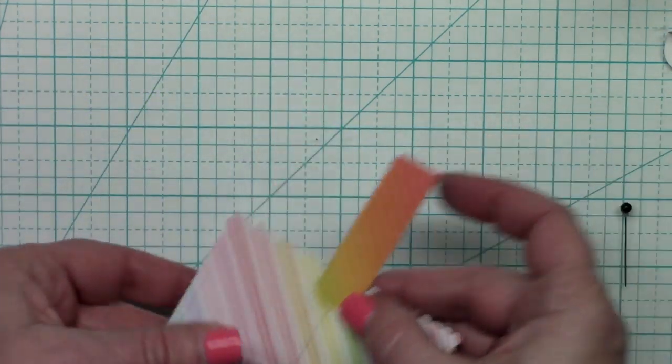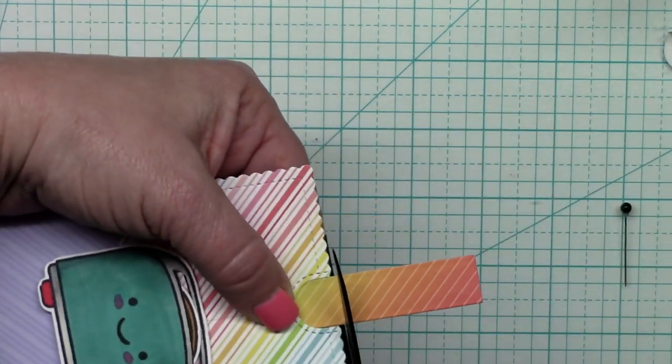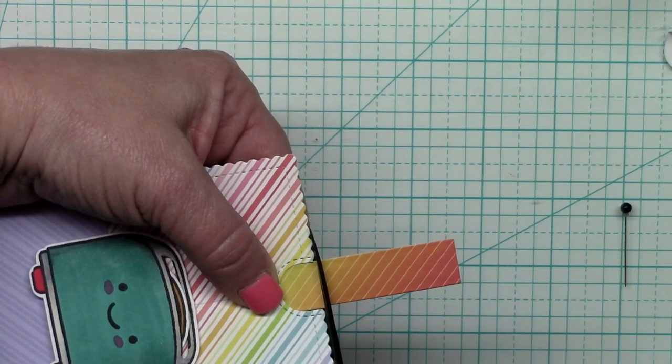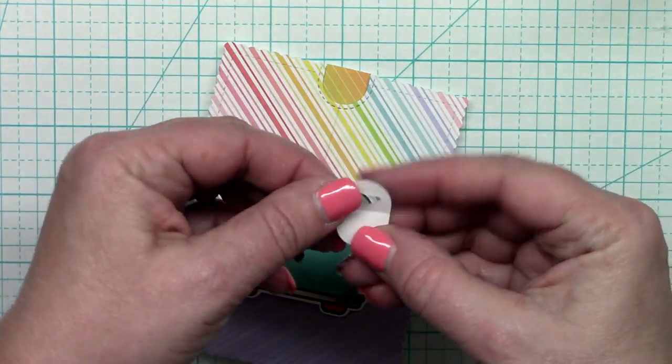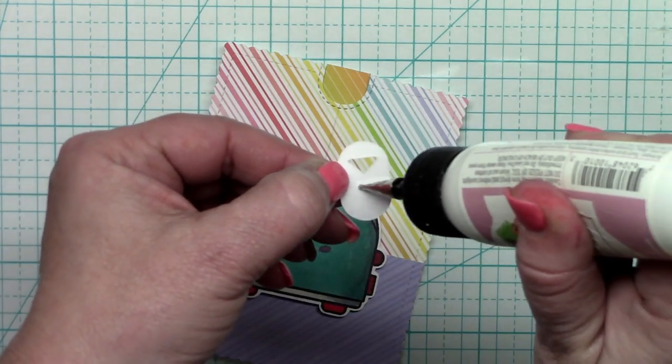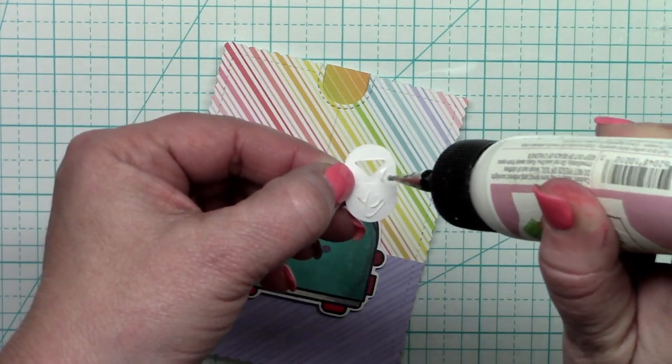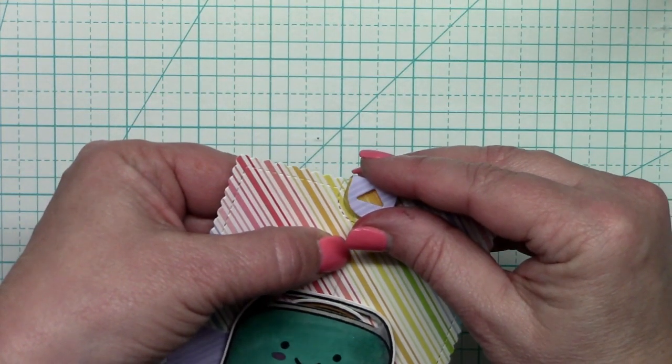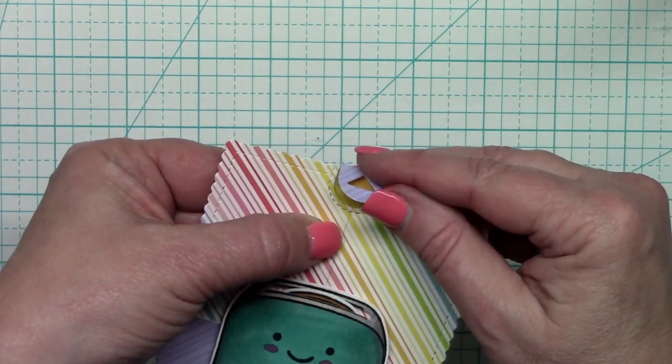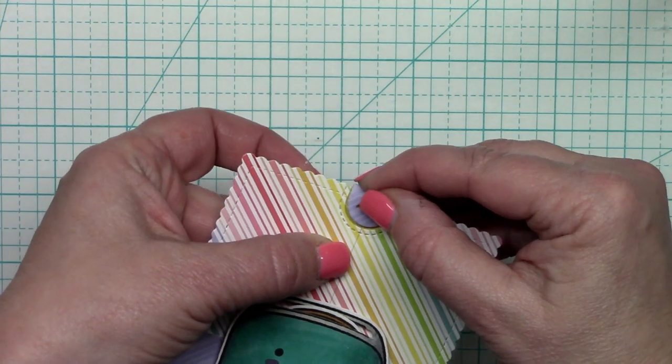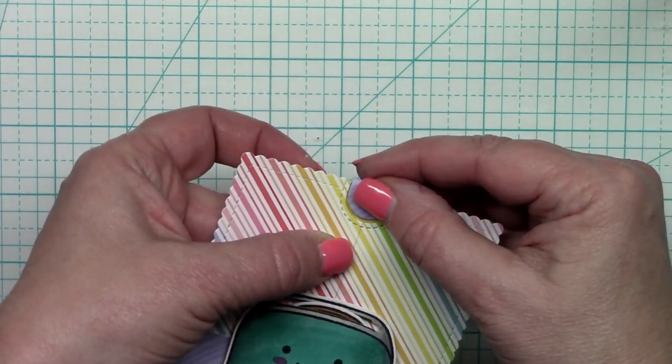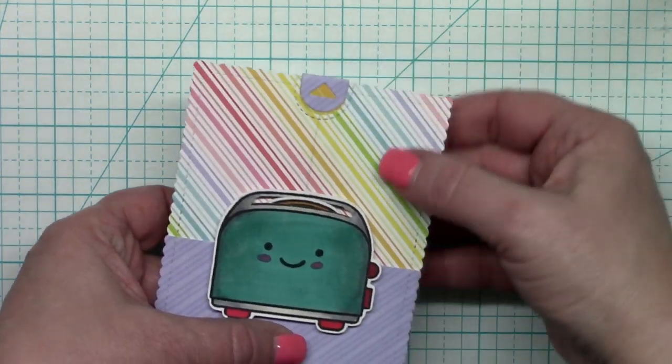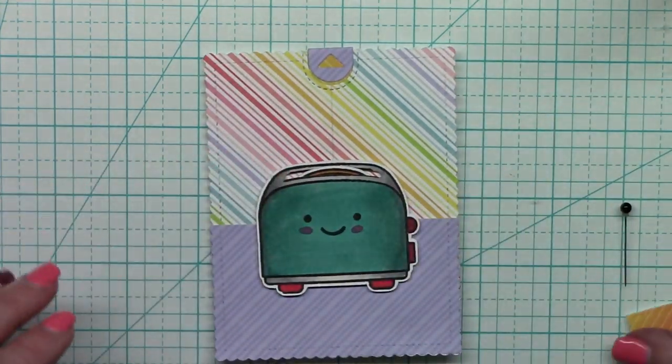And now I can go ahead and trim this pull tab off because obviously it's way too long. And once that's trimmed off I can apply the tab puller. I guess that's what I'm going to call it. And again it has that upward arrow which indicates to the recipient to pull it. And it fits of course just perfectly in the slot that was cut using the die right there at the top. And now you can pull it up and down and that toast moves nicely.